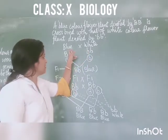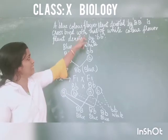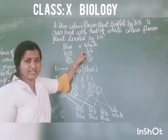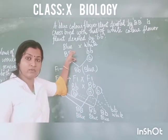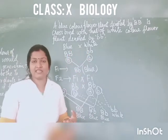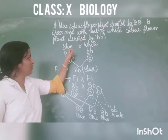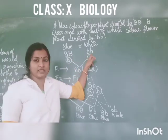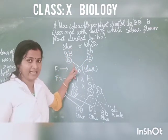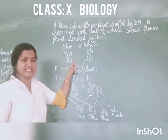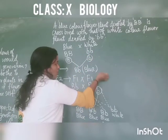We have to cross these two types of plants. The blue color flower plant is crossed with the white color flower plant. Blue and white are the phenotypes — the expressed characters. The genotype of blue is capital B, capital B, and white is small b, small b. The only allele expression in the blue color genotype plant is capital B, and in white only small b is present.